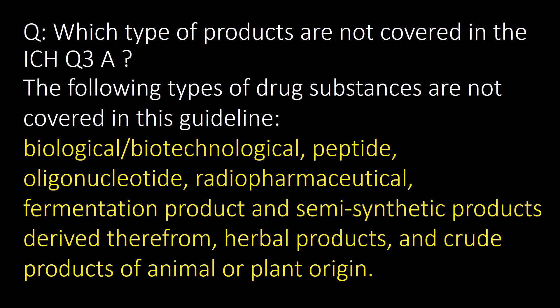Which types of products are not covered in ICH Q3A? The following types of drug substances are not covered in this guideline: biological, biotechnological, peptide, oligonucleotide, radiopharmaceutical, fermentation products and semi-synthetic products derived therefrom, herbal products, and crude products of animal and plant origin.